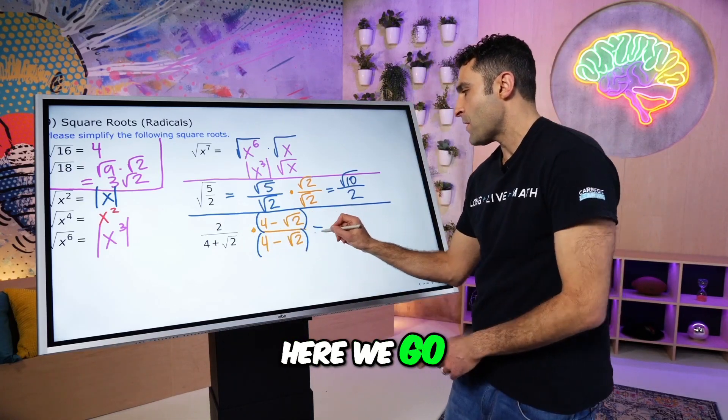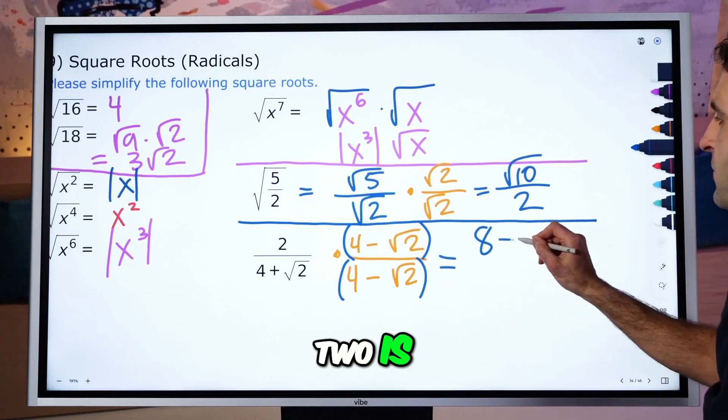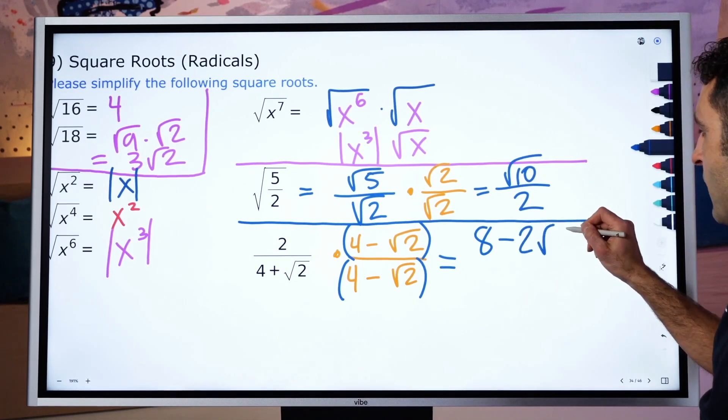Two distributes. Here we go. 2 times 4 is 8. 2 times negative root 2 is minus 2 root 2. Okay, numerator, cool.